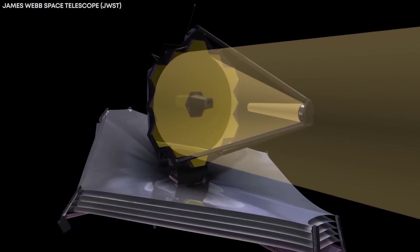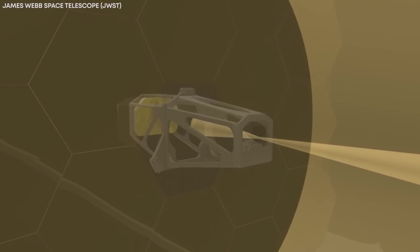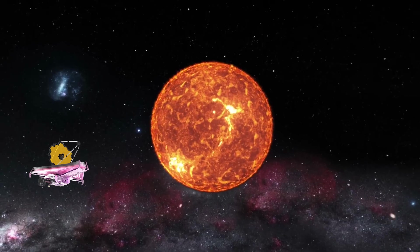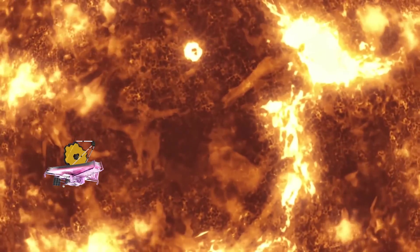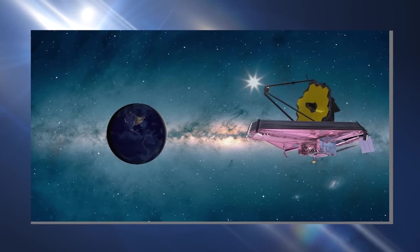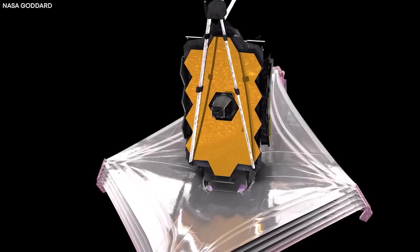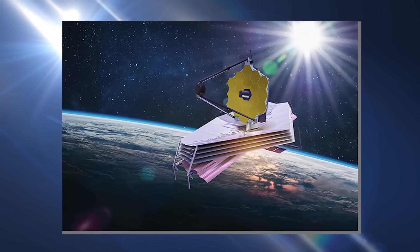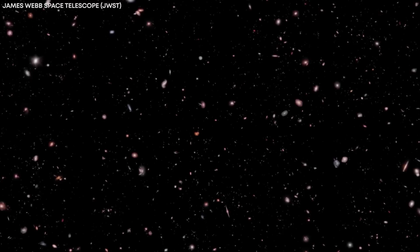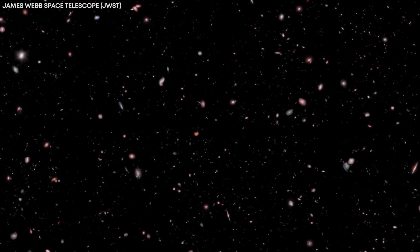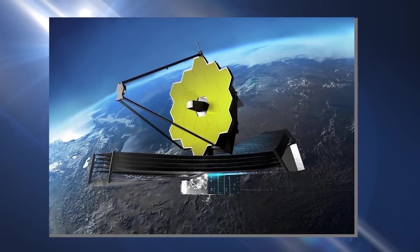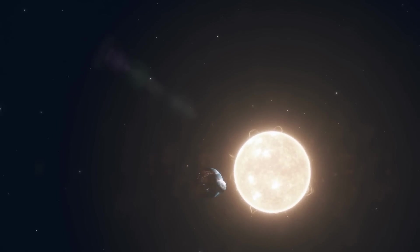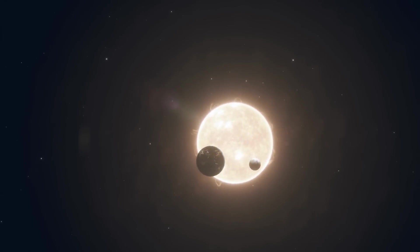After its launch, the JWST underwent a series of complex deployment procedures, including unfolded its sunshield and aligning its mirrors and instruments. It took several weeks for the telescope to become fully operational and is designed to function for at least 10 years. With its infrared capabilities and sophisticated instruments, JWST has revolutionized our understanding of the universe, providing valuable insights into the formation of celestial objects and potentially detecting signs of life beyond our solar system.